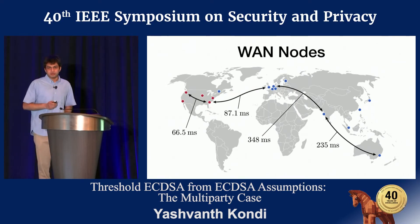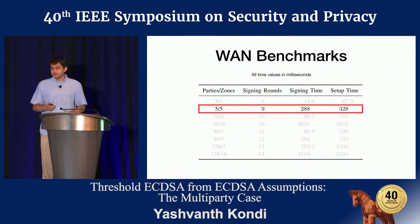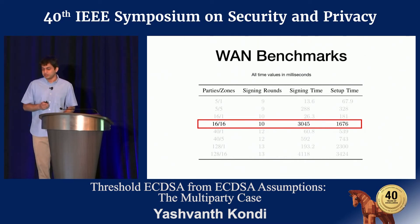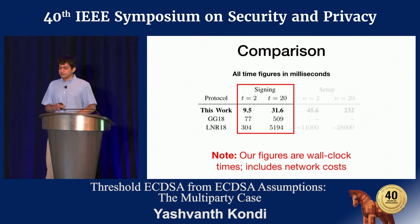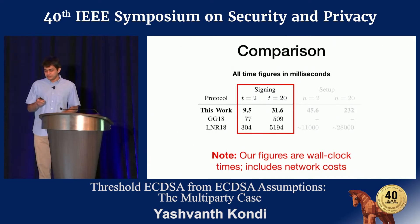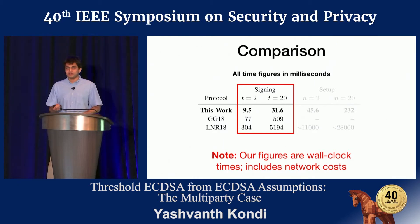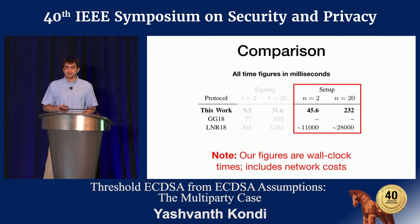Our WAN benchmarks were run with nodes around the world, with the heaviest link between Europe and India at about 350 milliseconds round-trip time. Five parties across the US signed in under 300 milliseconds, 16 parties with one in each zone of the world in just over three seconds, and 128 parties across the world in just over four seconds. Comparing with concurrent works in the LAN setting: our wall-clock times, including network costs, are an order of magnitude better than the next best work, even in low and high threshold settings. The same holds for setup costs.